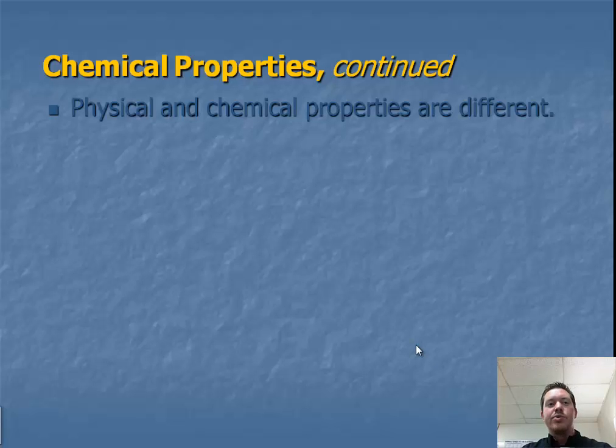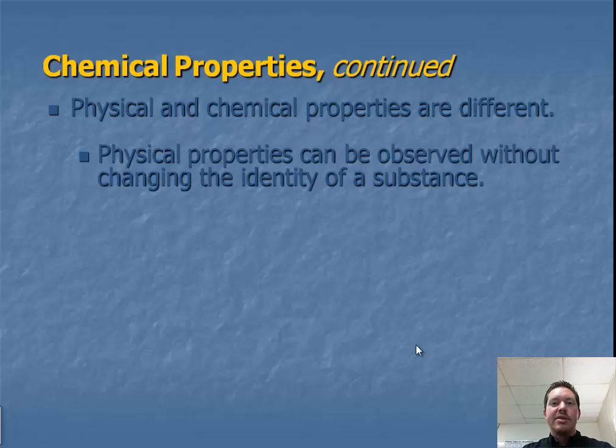And there is a difference between physical and chemical properties. Physical properties can be observed without changing the identity of a substance. So, I can take a piece of paper and I can crumple it up. I can unfold it. It's still a piece of paper.